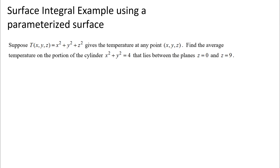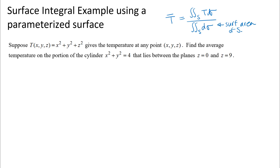We need to find average temperature. We talked in the last video about the idea that the average value of the function is going to be the integral of the function over the region that you want to find the average value on, divided by the size of the region — in this case, the surface area. So we're going to set that up and think a little bit about the region that we are integrating over.